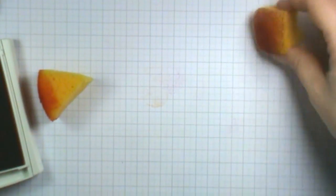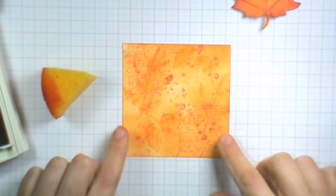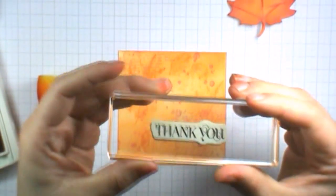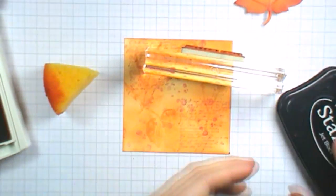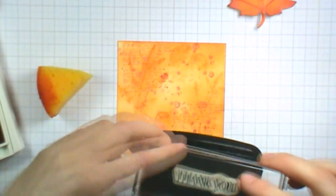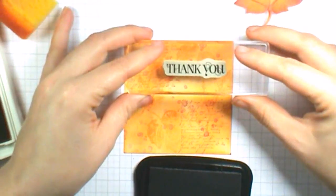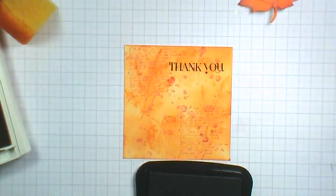We are now going to bring back our vanilla cardstock and we're going to take our sentiment from Curly Cute, I'm using Thank You. Then we'll take our Stazon ink and I'm just going to put that up to the top right hand corner of the card.